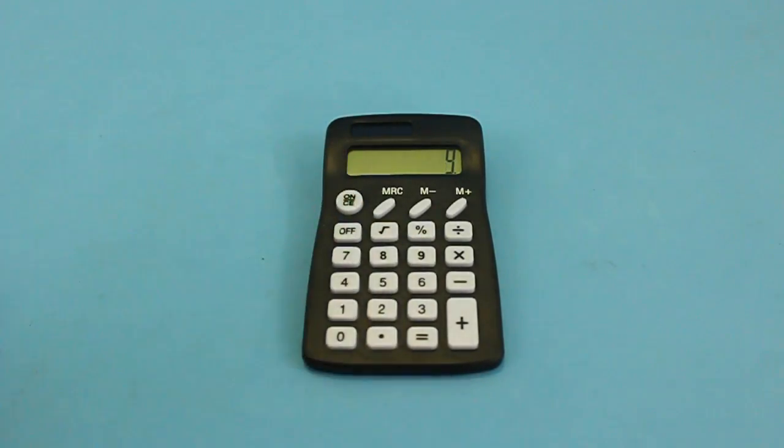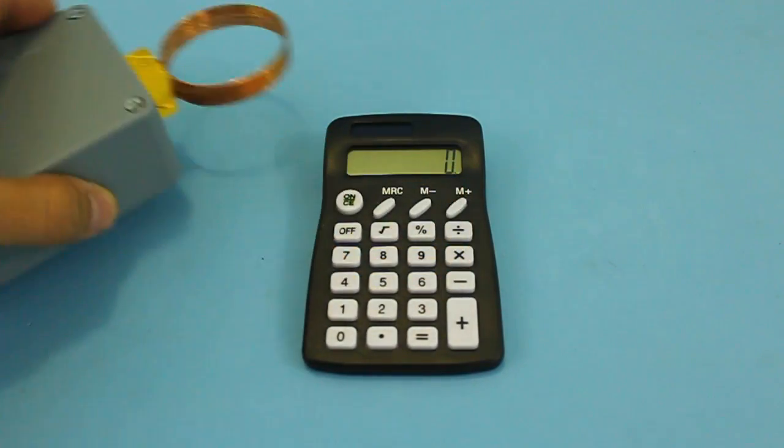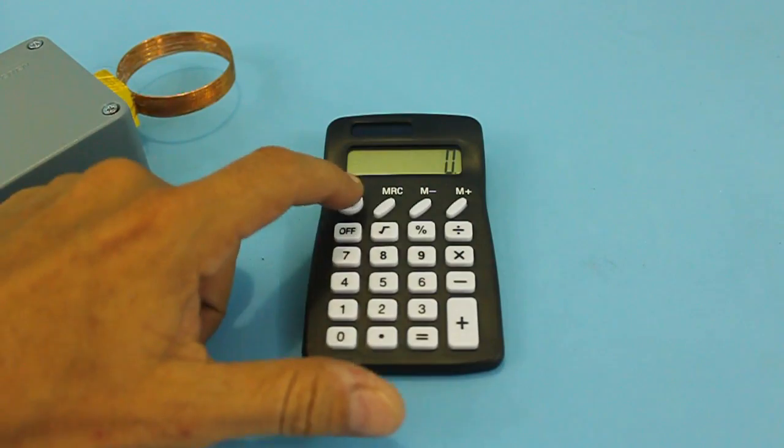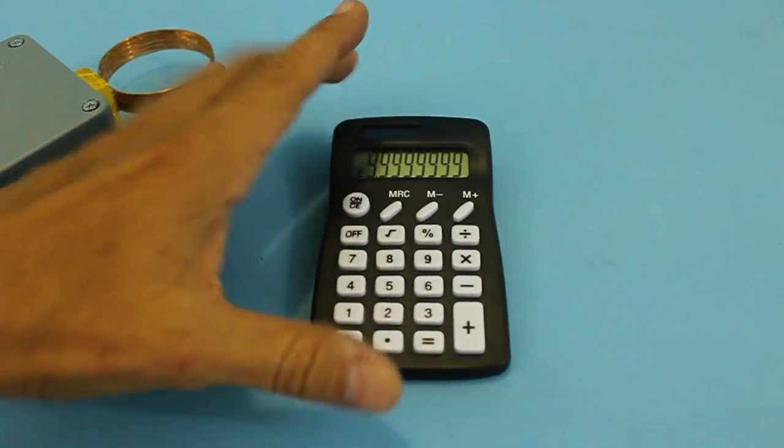The calculator reading is affected by the electromagnetic pulse. You can see it turns to zero or gives another reading.